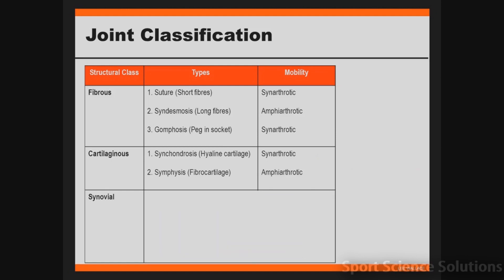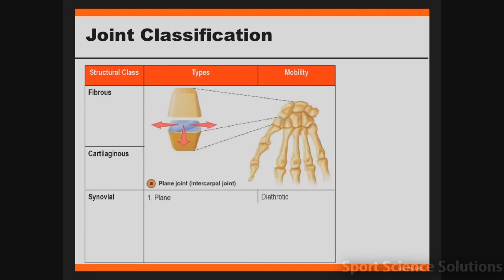The third type of structural classification is the synovial classification. These are joints characterized as being separated by a fluid-containing joint cavity. There are six different types of synovial joints. The first type is called a plane joint — an example occurs at the intercarpal joints. All plane joints involve two flat surfaces which rub up against each other, not fitting inside one another. The mobility classification of the plane joint is diarthrotic, meaning freely movable. Importantly, all synovial joints are characterized as diarthrotic or freely movable.